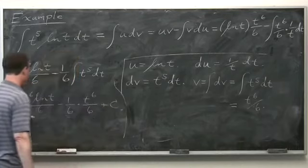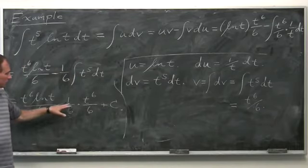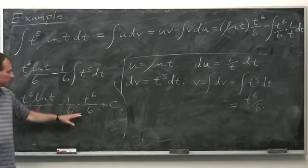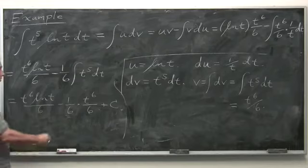So we get t⁶ ln(t) over 6 minus (1/6) times the integral of t⁵ dt, which gives t⁶ ln(t) over 6 minus t⁶/36 plus c. That's our answer — you could also write the second term as minus t⁶/36.